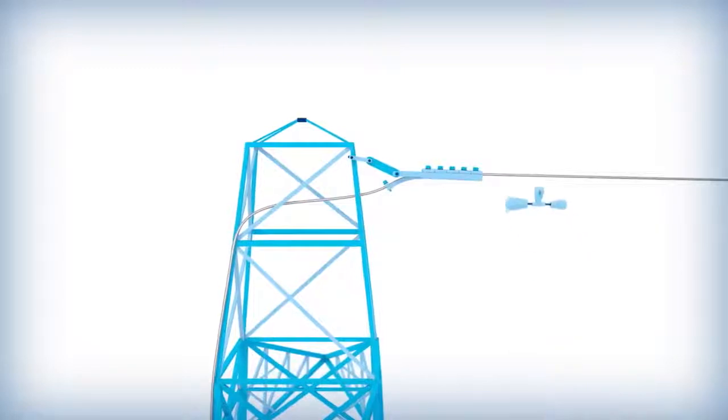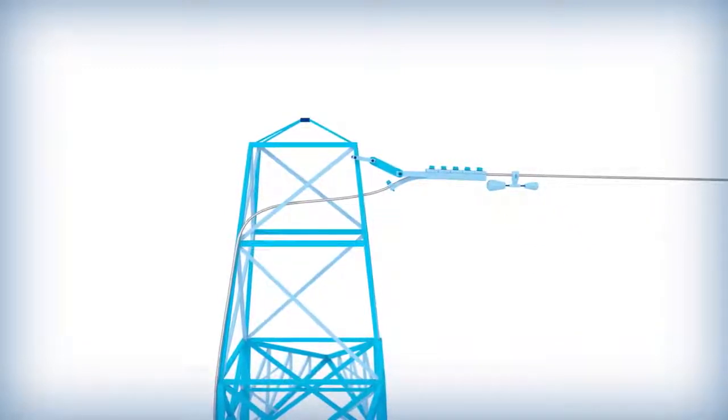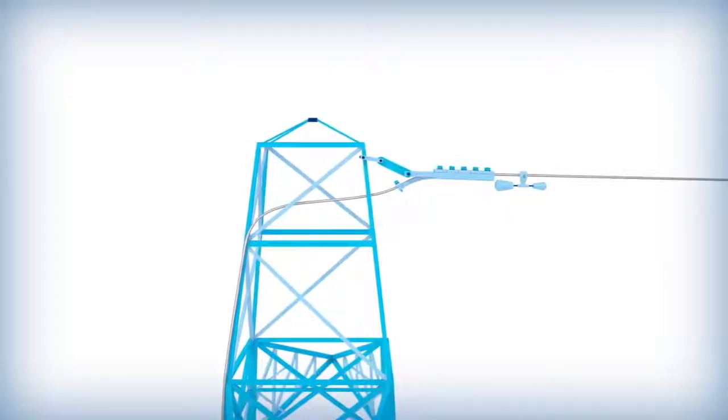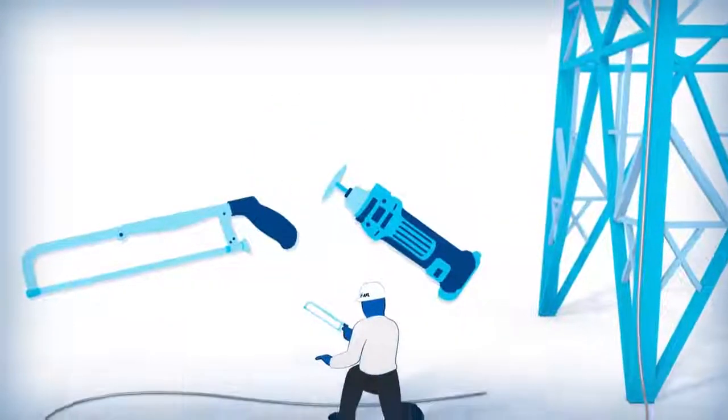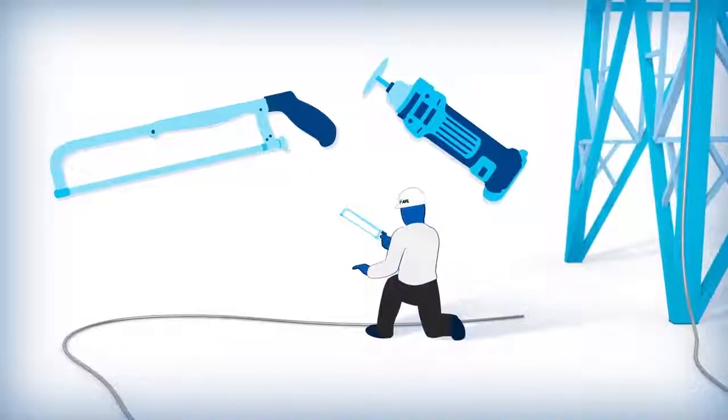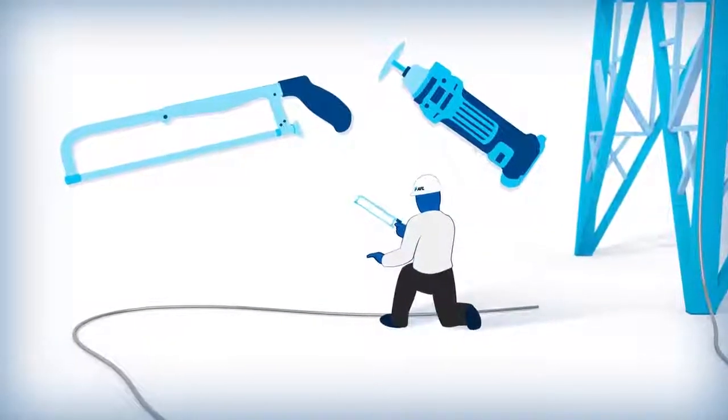If vibration dampers are required, they should be placed on the OPGW immediately after clipping in. When cutting the OPGW, a hacksaw-type cutter or rotary saw should be used to avoid crimping the cable and damaging the optical units.